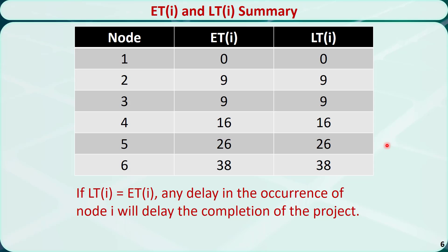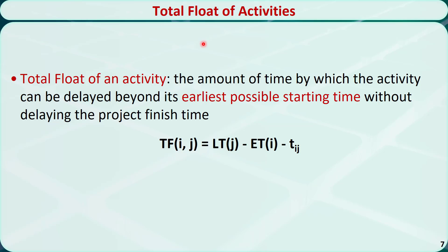Here is the summary of the early time and late time for all the nodes. We find that for each node, the early time equals the late time. That means any delay in the occurrence of node i will delay the completion of the project. Now I'll introduce another concept called total float. The total float of an activity is the amount of time by which the activity can be delayed beyond its earliest possible starting time without delaying the project finishing time. It is a measure of the scheduling flexibility of the activity. It can be calculated using this formula: the total float of activity from node i to node j equals the late time of node j minus the early time of node i minus the duration of the activity between node i and node j.